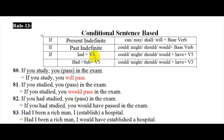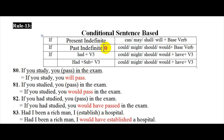If you have had plus V3, you will pass. If you study, you will pass. You would have passed in the exam — had plus V3 — had plus subject plus V3. Had he been a rich man, I would have established a hospital. Had plus V3, had plus V3 — this is the conditional type 3 structure.